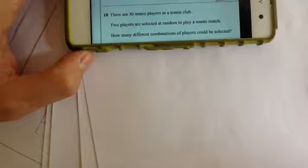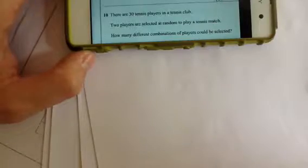There are 30 tennis players in the Tennis Club. Two players are to be selected at random to play a tennis match. How many different combinations could be selected?